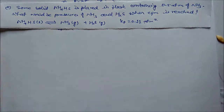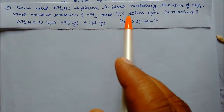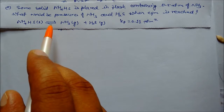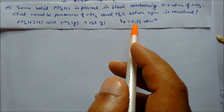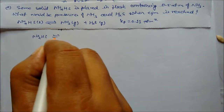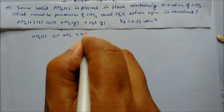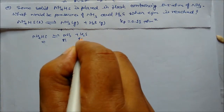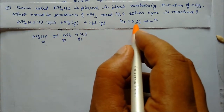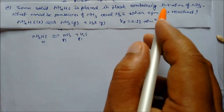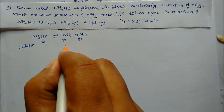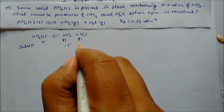Next problem: solid ammonium hydrogen sulfide is placed in a flask containing 0.5 atmosphere of ammonia. We need to find the pressures of ammonia and H2S at equilibrium. Writing the equation: NH4HS (solid) gives ammonia (gas) and H2S (gas). The initial pressure of ammonia is 0.5 atm and Kp is 0.1136.